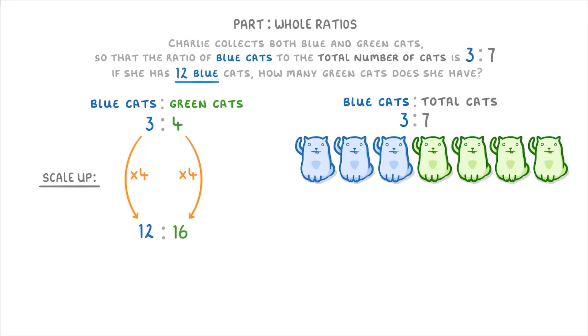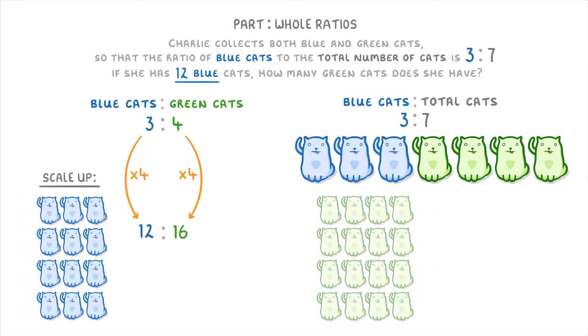So we now know that if she has 12 blue cats, she must have 16 green cats. Or in other words, way too many cats.